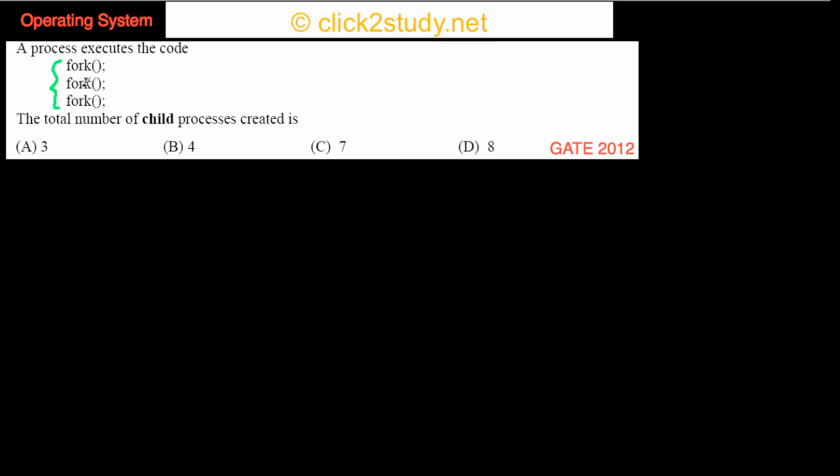So this fork system call is important in UNIX. It comes from the UNIX environment, the UNIX operating system. When a process is running some code and it makes a fork system call, then what happens is that it creates a child process.